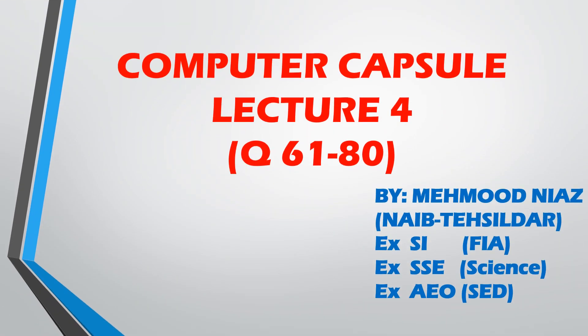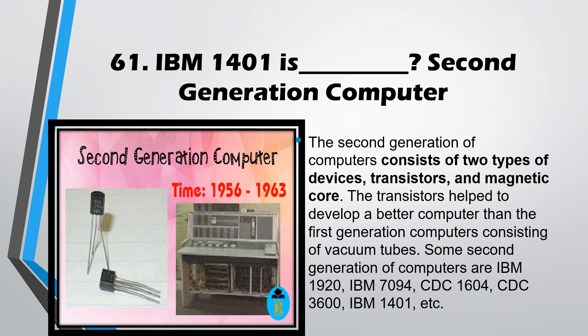Bismillahirrahmanirrahim. Computer Capsule Lecture 4, Questions 61 to 80. Question No. 61: IBM 1401 is a second generation computer. The second generation period was from 1956 to 1963.